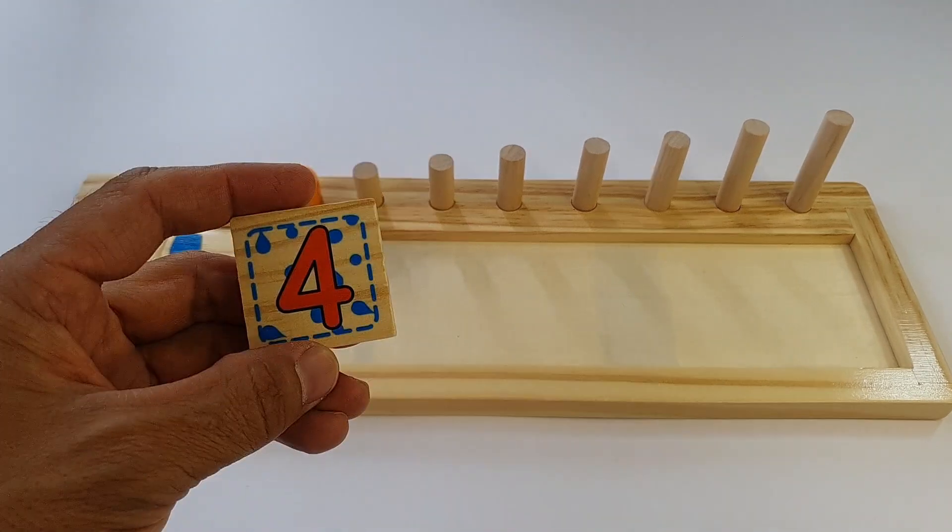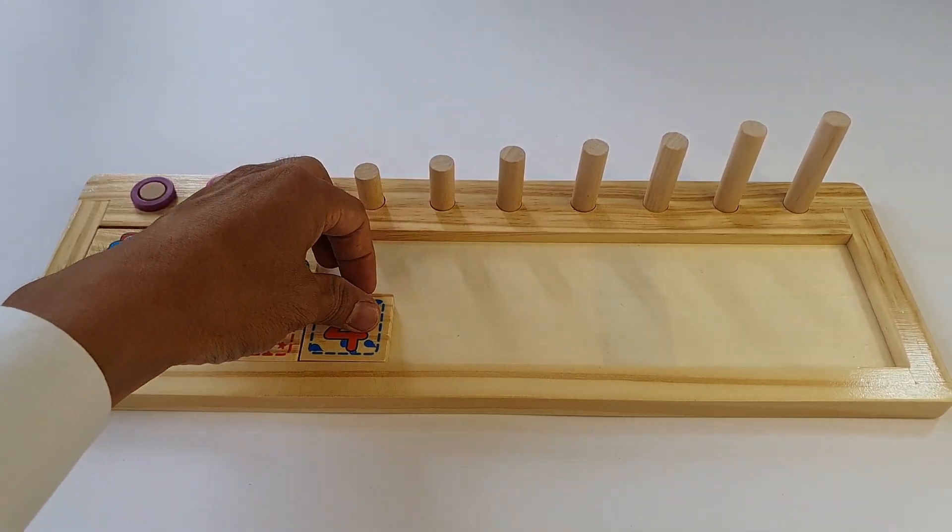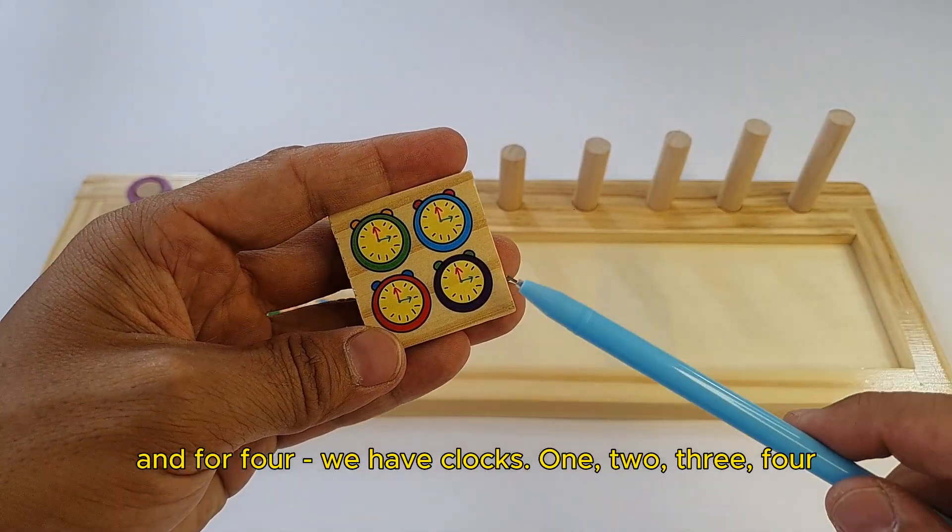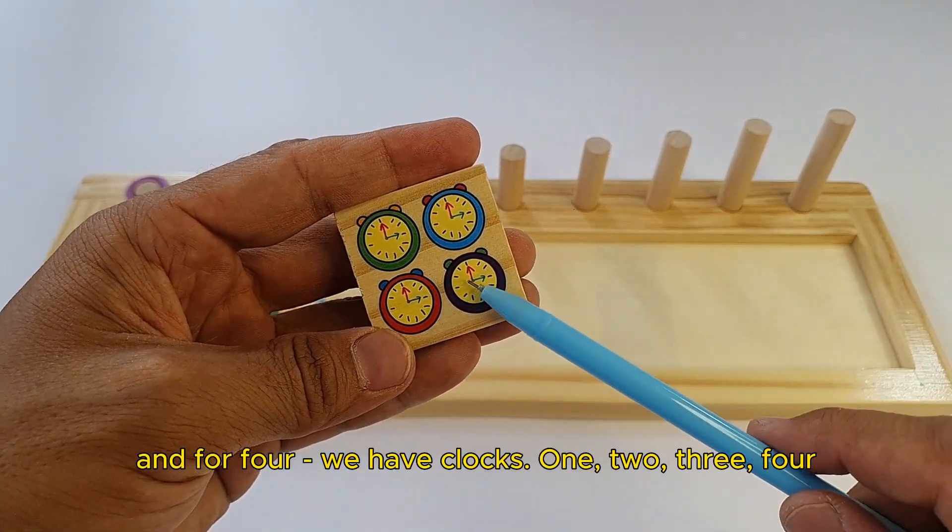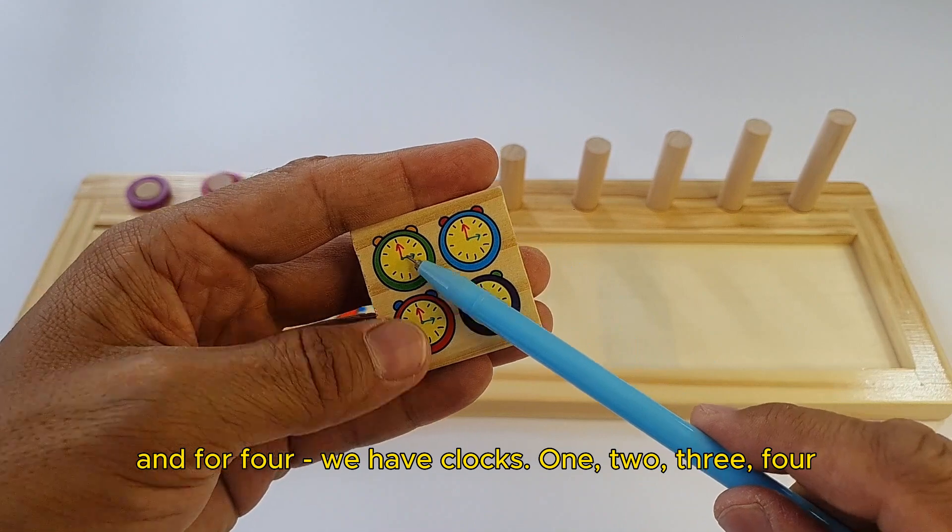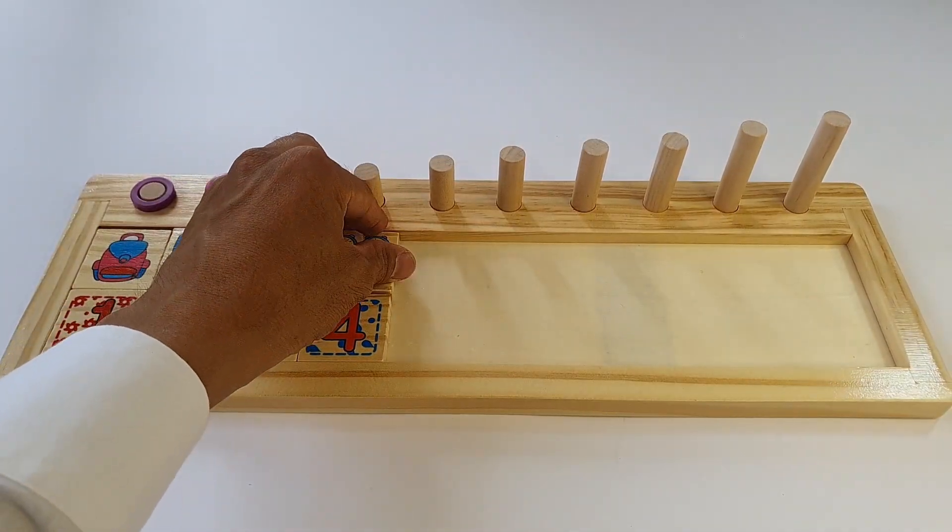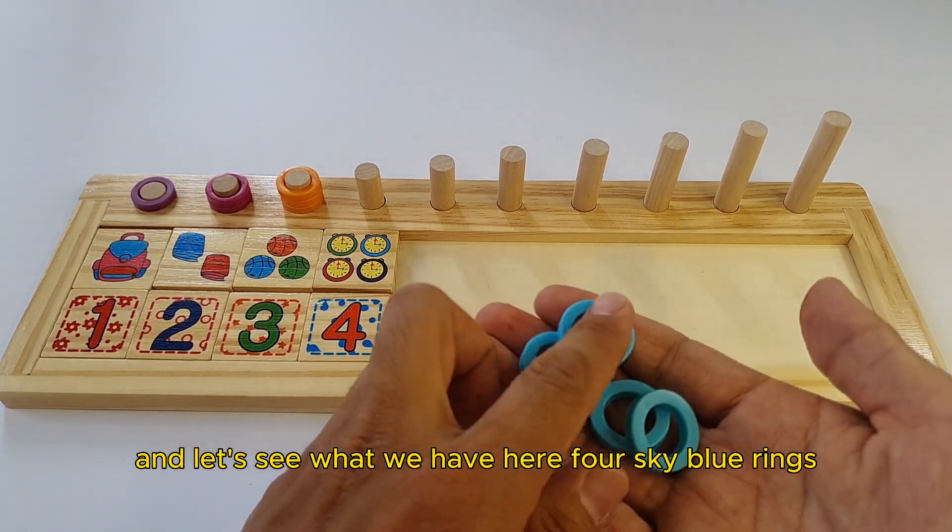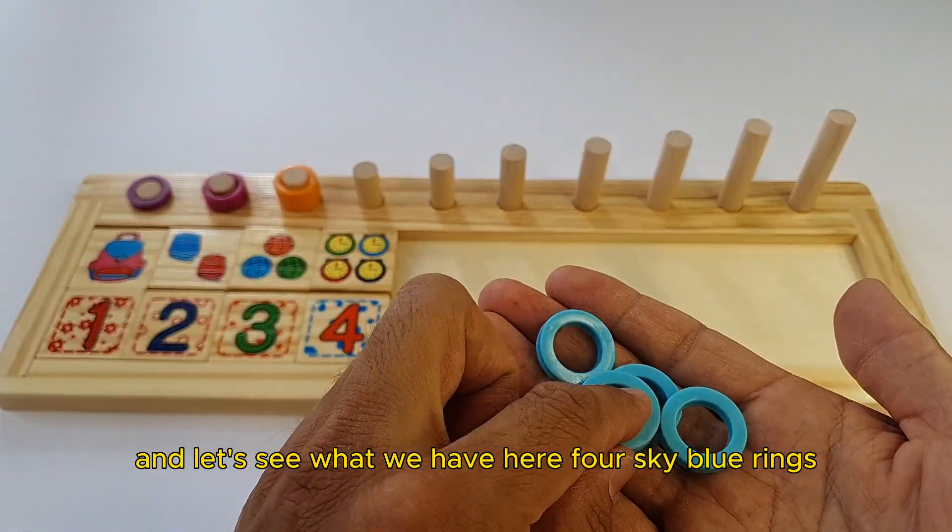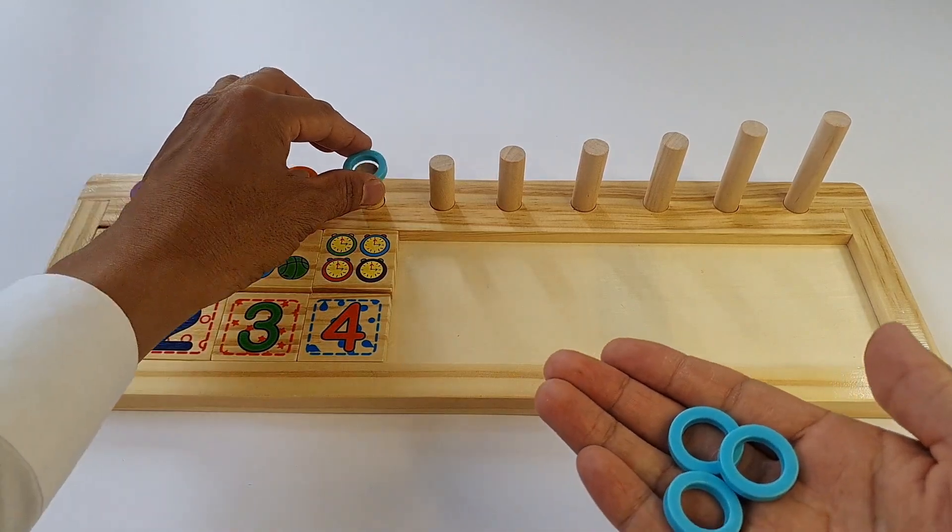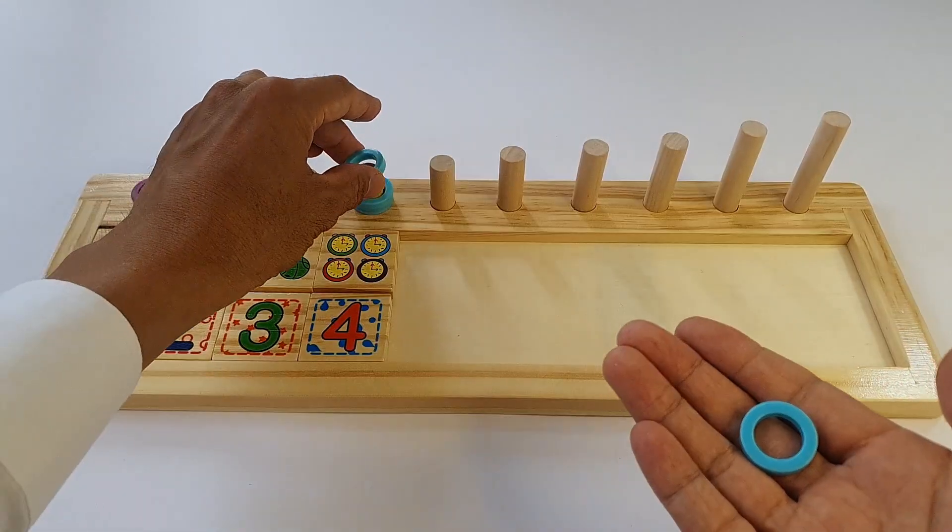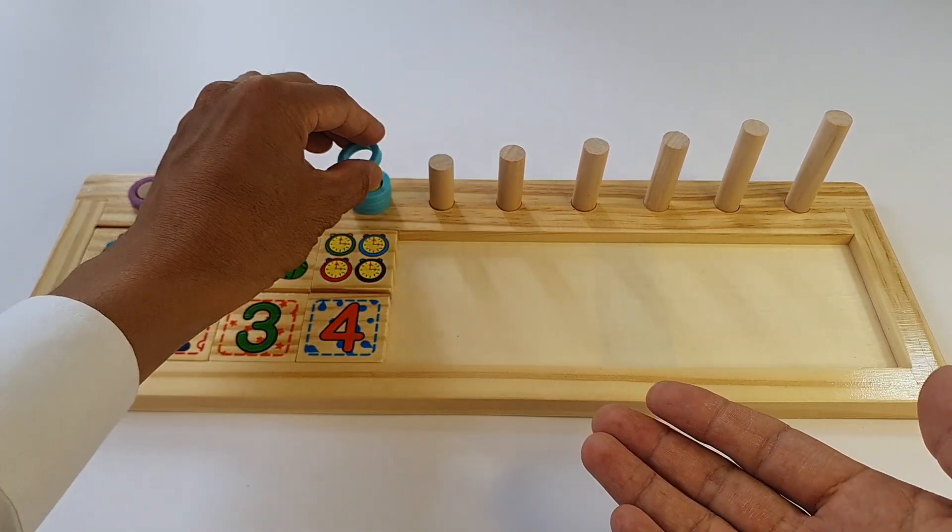Yes, it is four. And for four, we have clocks. One, two, three, four. And let's see what we have here. Four sky blue rings. One, two, three, four.